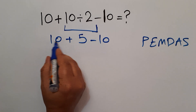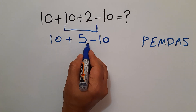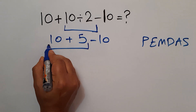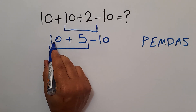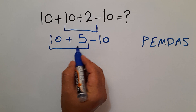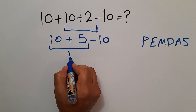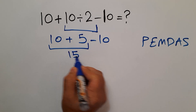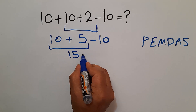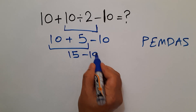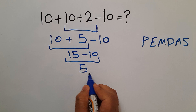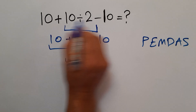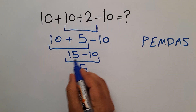10 plus 5 equals 15, and 15 minus 10 equals 5. So our final answer to this problem is 5.